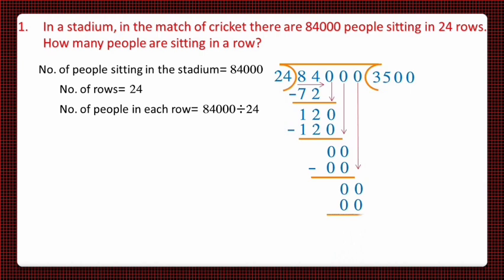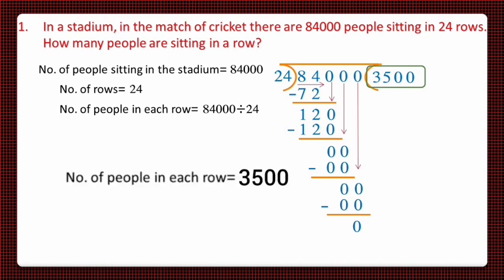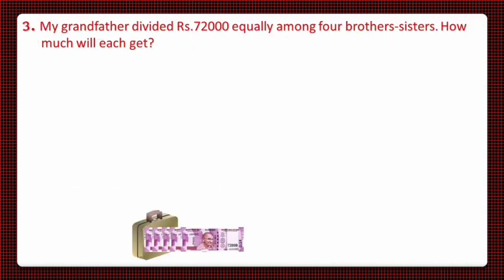So 3,500 is the answer we get after dividing 84,000 by 24 — 3,500 people are sitting in one row. Now let's move to question number three: my grandfather divided rupees 72,000 equally among four brothers and sisters. How much will each get?